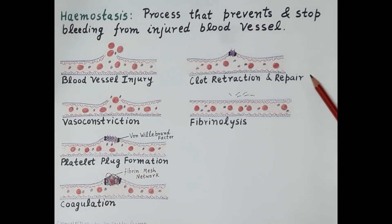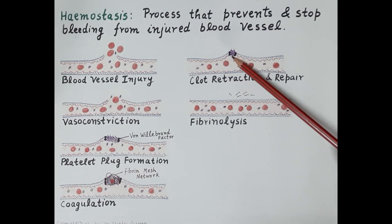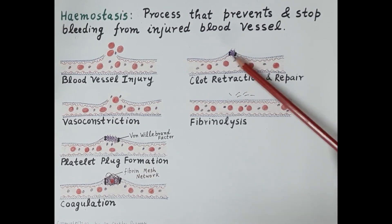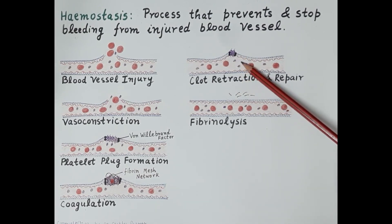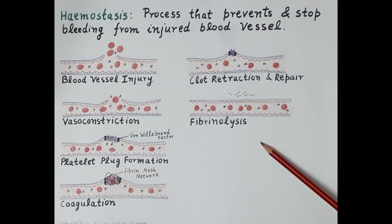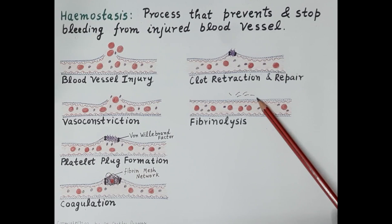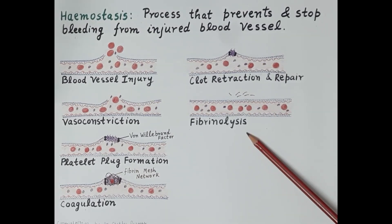Coagulation is followed by clot retraction and repair. The platelets contract, and because of this contraction the clot shrinks. The ruptured edges of the blood vessel come close together, the hole of the injured blood vessel wall is closed, and healing of the injured tissue begins. The last step is fibrinolysis — the clot, or fibrin mesh network, dissolves after complete healing of the tissues. This is how hemostasis stops bleeding and repairs the injured blood vessel.